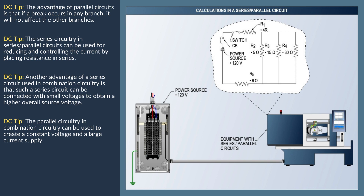Therefore, RT equals 30 divided by 9, which equals 3.33 ohms. The group of parallel resistances is equivalent to one resistance with a value of 3.33 ohms. To find the total resistance, simply add R1, RT, and R5: R1 (4 ohms) + RT (3.33 ohms) + R5 (6 ohms) equals a total resistance of 13.33 ohms.